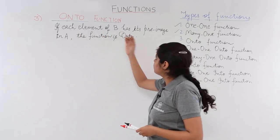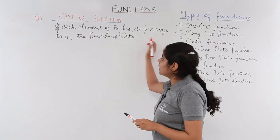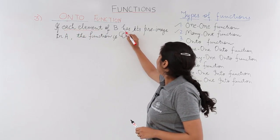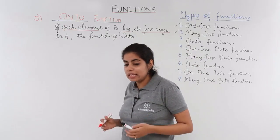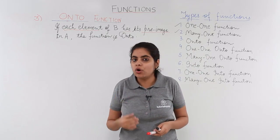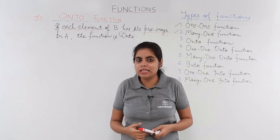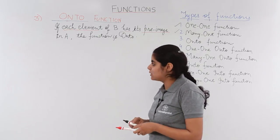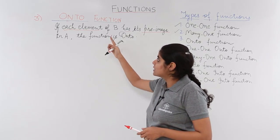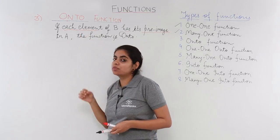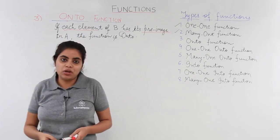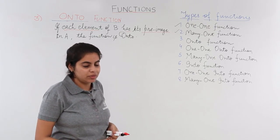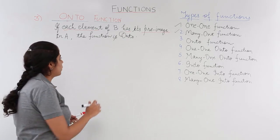If each element of B has its pre-image in A, then the function is onto. The important word here is 'each' — every element of B must have its pre-image in A. We already know from previous knowledge what image and pre-image are. Let's go directly to examples to understand this. Let's see an example to understand what is onto and what is not onto.